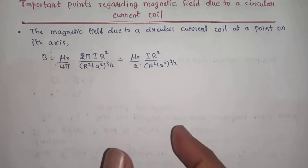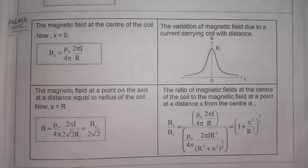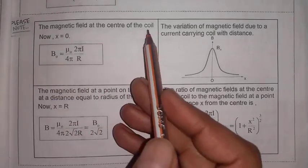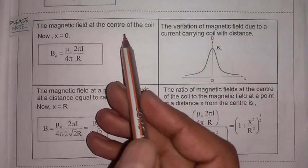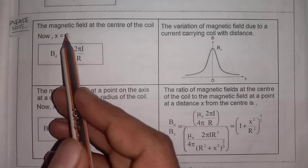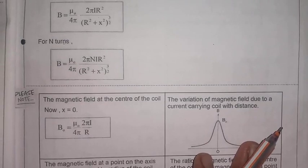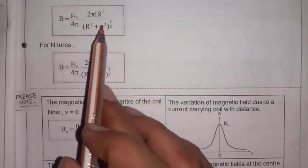This is the magnetic field at the center of the circular coil. Now, when the point is at the center, the distance x is 0. This is the general formula, so in this formula x equals 0.